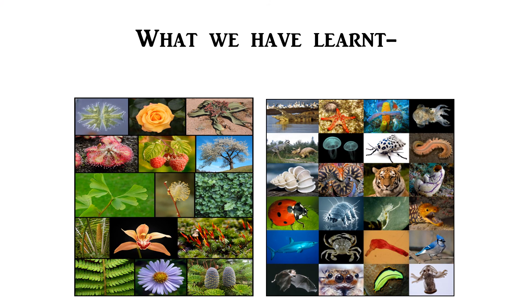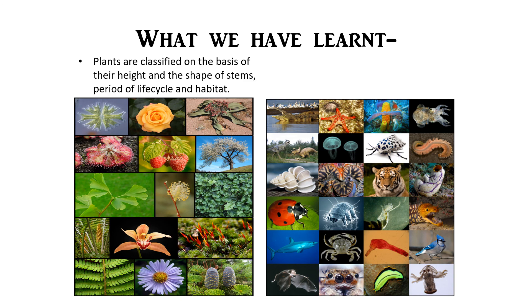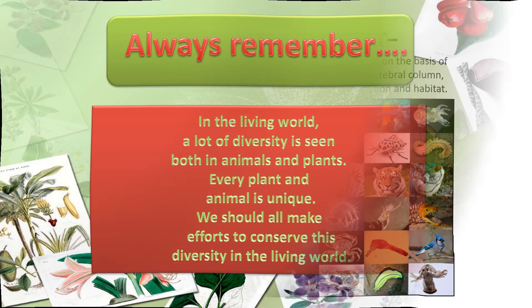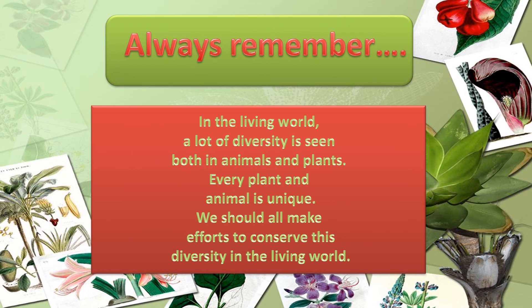What we have learned: Plants are classified on the basis of their height, shape of stem, period of life cycle, and habitat. Animals are classified on the basis of cell structure, vertebral column, method of reproduction, and habitat. Always remember that in the living world a lot of diversity is seen both in animals and plants. Every plant and animal is unique. We should all make efforts to conserve this diversity in the living world.